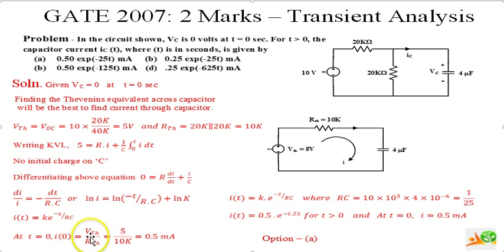Now the current at t equals 0 is V Thevenin over R Thevenin. We can find 5 volts over 10k, that is 0.5 milliampere. So at t is equal to 0, the current flowing is 0.5 milliampere.